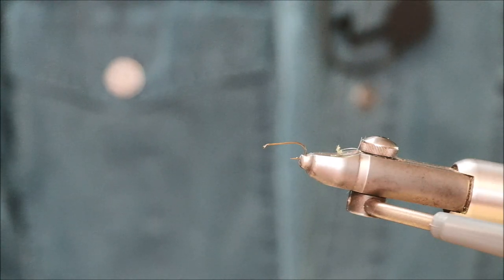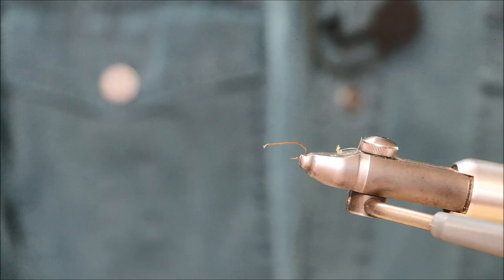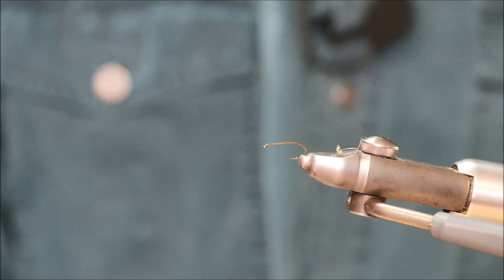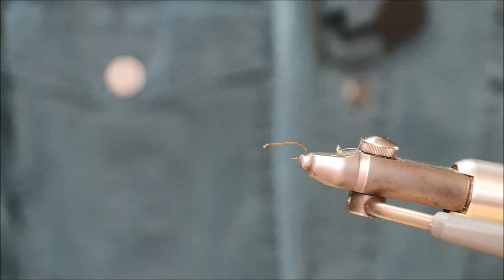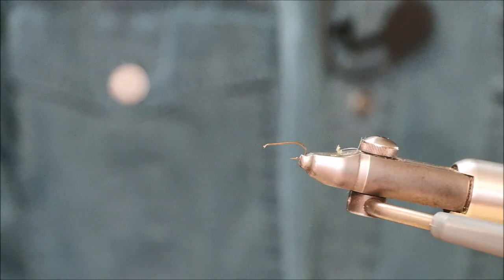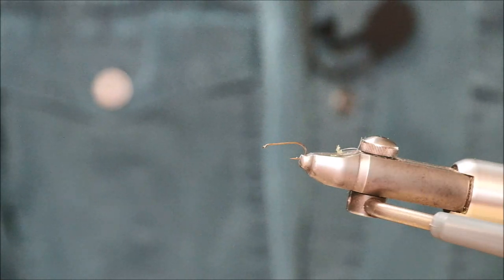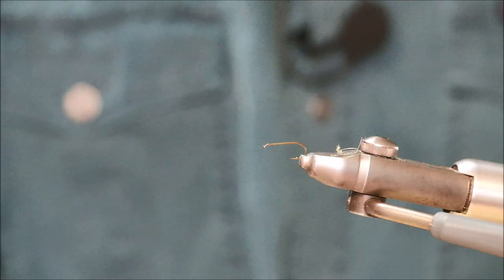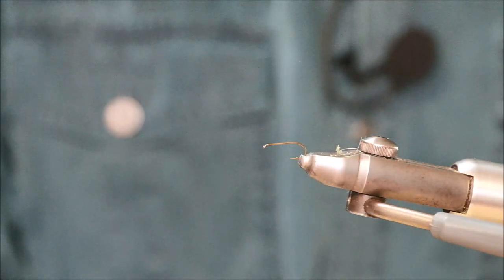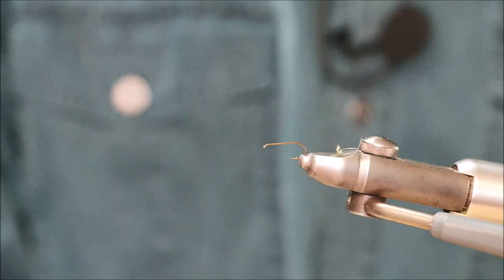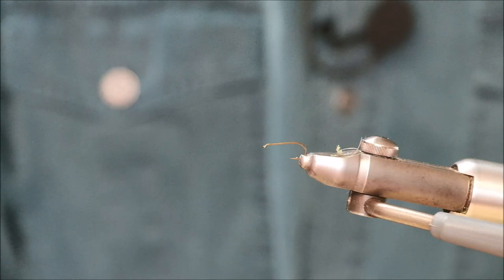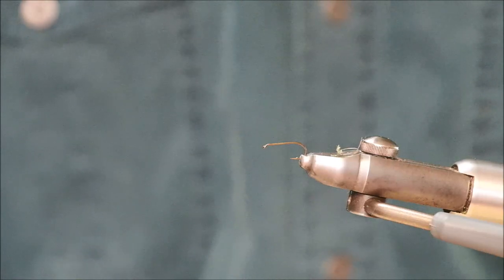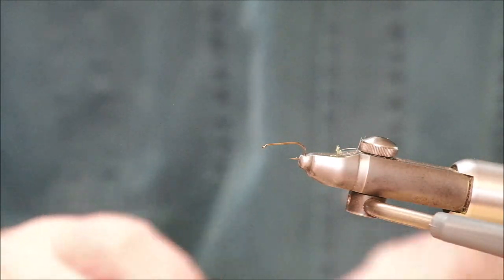When it does that, it pulls itself out of its exoskeleton, as it's known, a shuck. Its skeleton is on the outside, as opposed to animals like ourselves who have our skeleton on the inside. They break that skeleton and they climb out of it, but sometimes that skeleton hangs on and then it's known as a shuck, a trailing shuck. I've seen the trout deliberately select those flies as opposed to flies without the trailing shuck. So from that point of view, it's important to be able to replicate that.